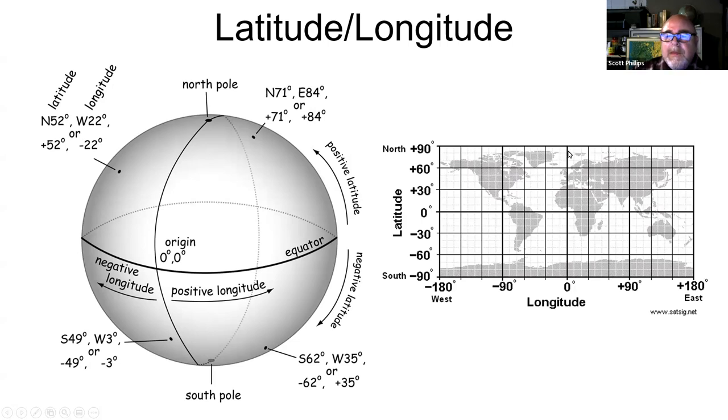This would be our grid here. The prime meridian goes through London, England there. West of there is negative, east of there positive. This would be the equator down here at zero degrees. North of there positive, south of there negative.